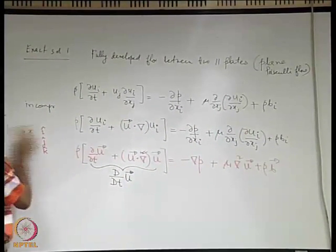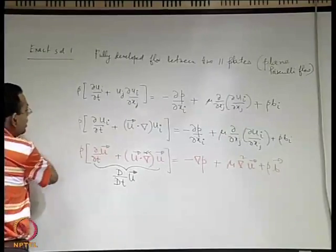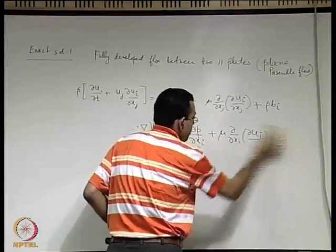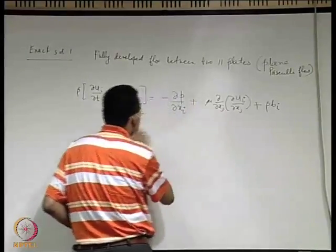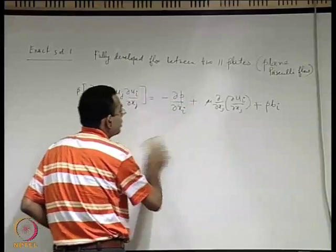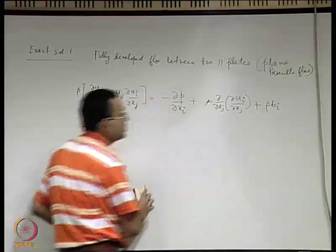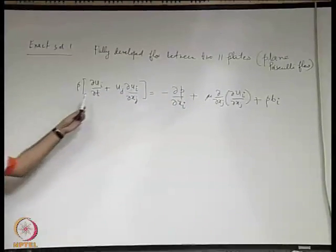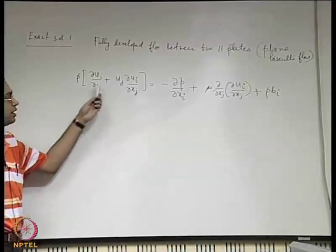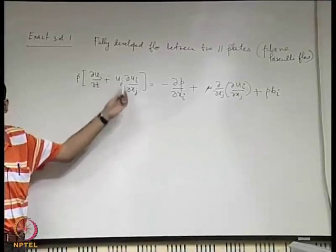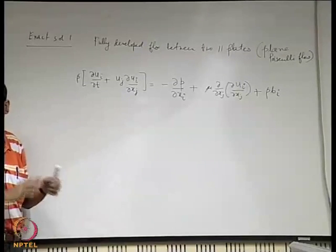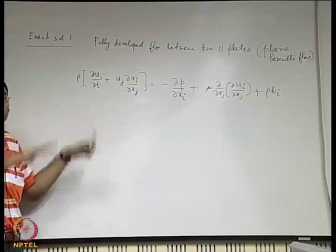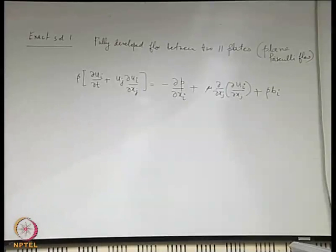First, we will draw a sketch to understand the specific form of the Navier-Stokes equation in this case. Here we can very elegantly use the Cartesian index notation because the coordinate system inherent to this description is a Cartesian one. The understanding is that you have two parallel plates.